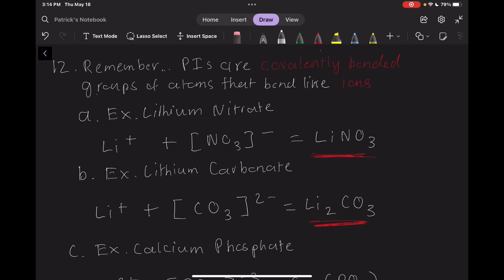This point is worth reiterating. The atoms inside a PI are covalently bonded, but the overall molecule forms bonds like an ion. For instance, lithium nitrate is composed of the lithium cation and the nitrate PI. The former has a positive one charge, the latter has a negative one charge, so they bond and form the following compound, LiNO3. Here are two more examples.